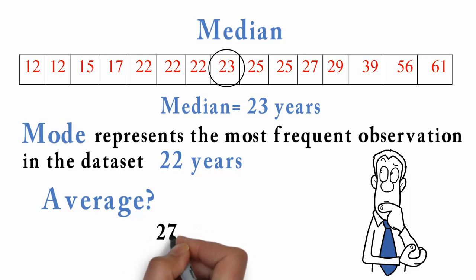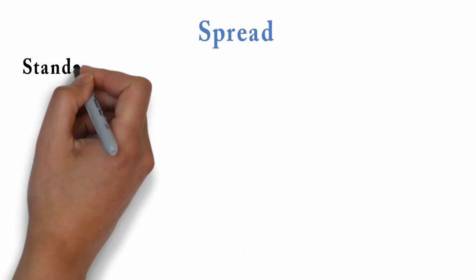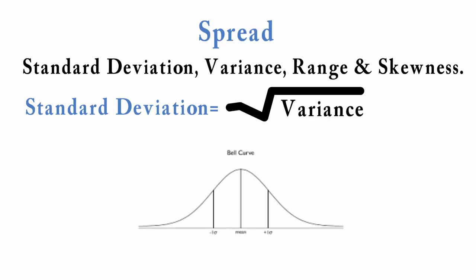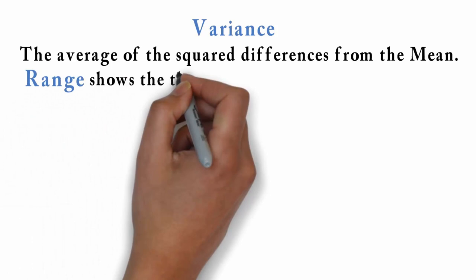To measure spread, we use standard deviation, variance, range and skewness. Standard deviation is the square root of the variance. A low standard deviation means that most of the numbers are close to the average. A high standard deviation means that the numbers are more spread out. Variance is the average of the squared differences from the mean. Range shows the difference between the largest and the smallest values in a set of data.